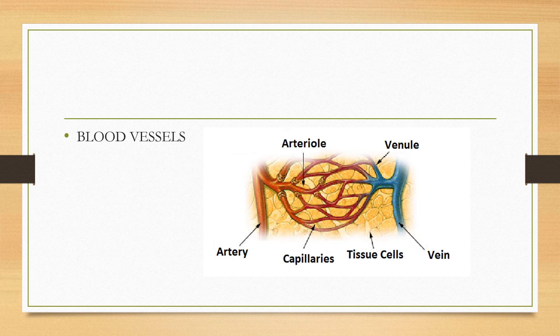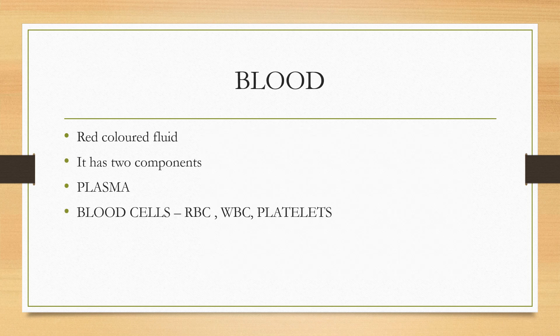The third part is blood vessels. Blood vessels are the components of the circulatory system that transport blood throughout the human body. These vessels transport blood cells, nutrients and oxygen to the tissues of the body. They also take waste and carbon dioxide away from the tissues. Blood vessels are needed to sustain life because all of the body's tissues rely on their functionality. Let us learn about each of them in brief.